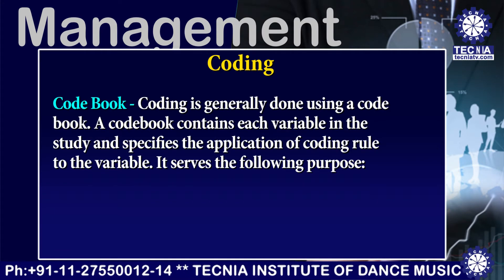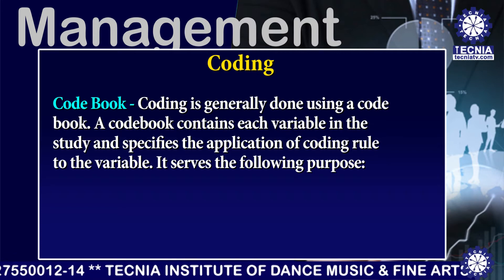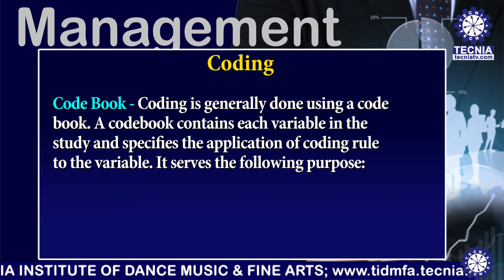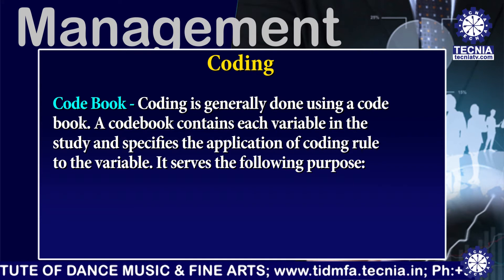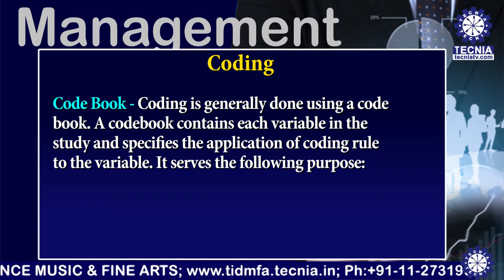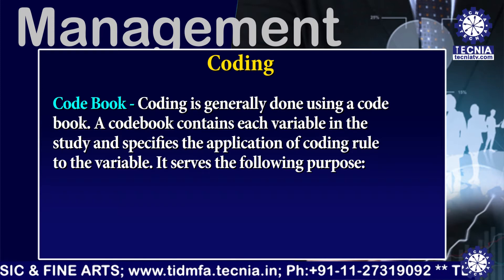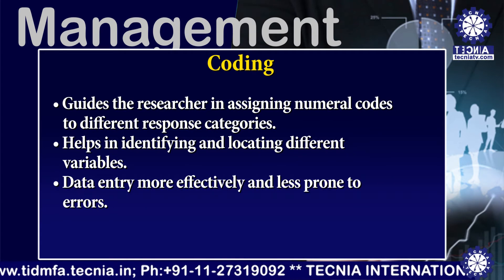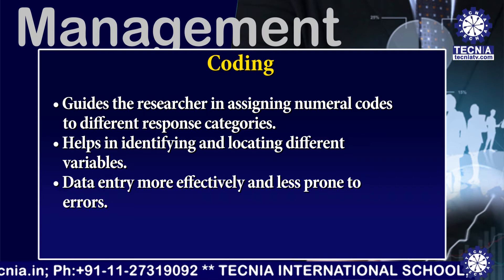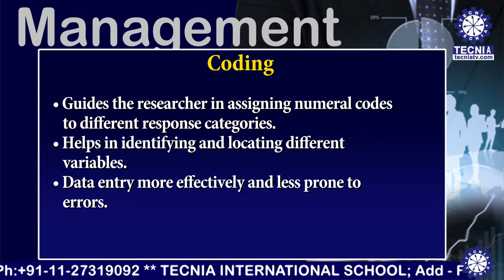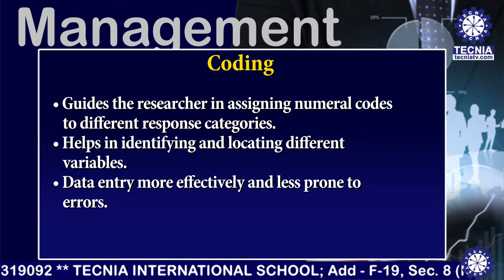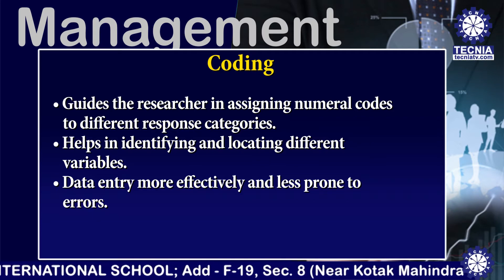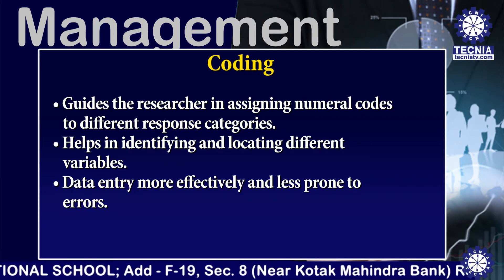The first term is the code book. Coding is generally done in a code book. A code book contains each variable in the study and specifies the application of coding rules to the variable. It serves the following purposes: first, it guides the researcher in assigning numeral codes to the different response categories; second, it helps in identifying and locating different variables; third, it makes data entry more effective and less prone to errors.